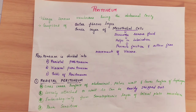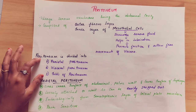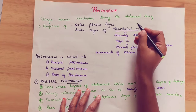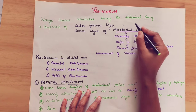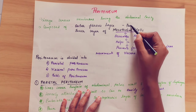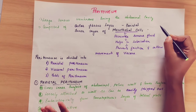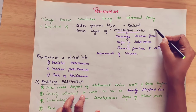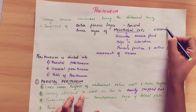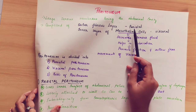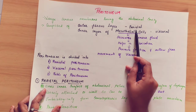Coming to the divisions of the peritoneum. We will divide it into three: parietal peritoneum, visceral peritoneum, and folds of peritoneum. The outer layer is parietal peritoneum and the inner layer is visceral peritoneum.